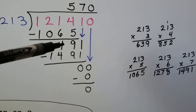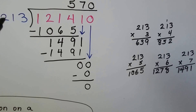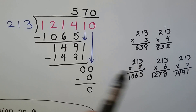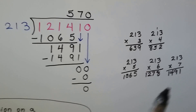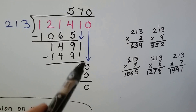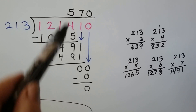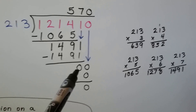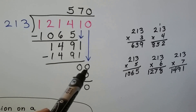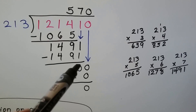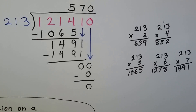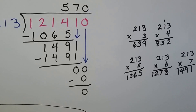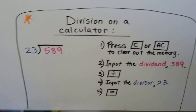We do our subtraction and get 149. Bring down the next digit — we ask how many times 213 can fit into 1491. It's exactly 7. We put 7 above the dropped digit, multiply 213 times 7 to get 1491, subtract to get zero, bring down the remaining zero. How many times can 213 fit into zero? None — put a zero up, multiply to get zero, and we get no remainder. Answer: 5,070.